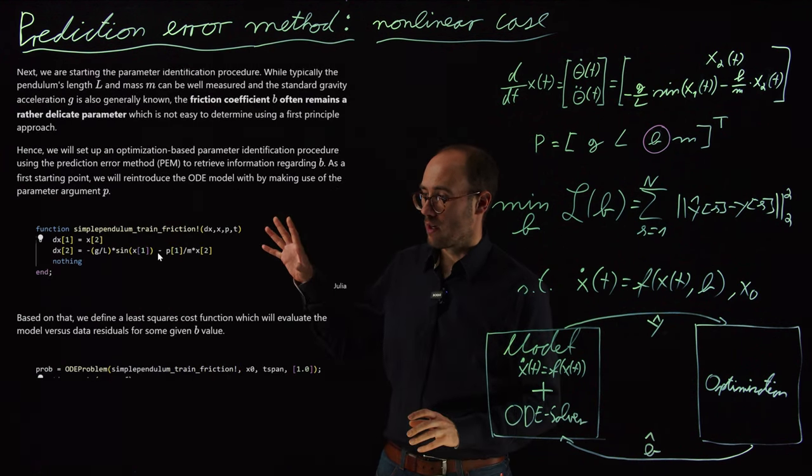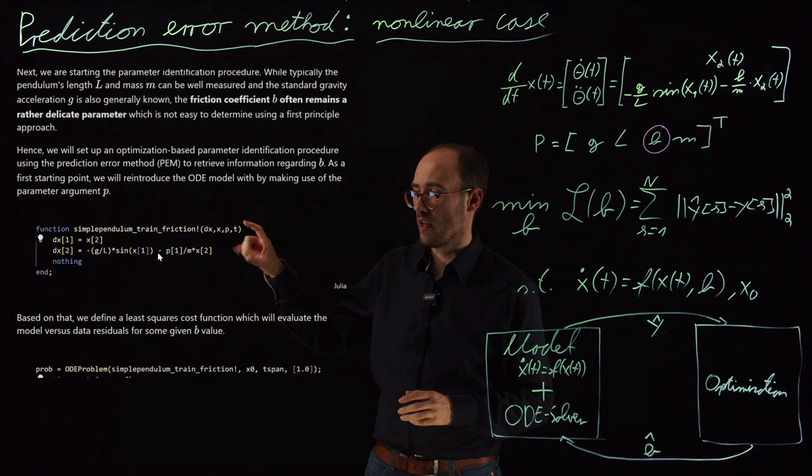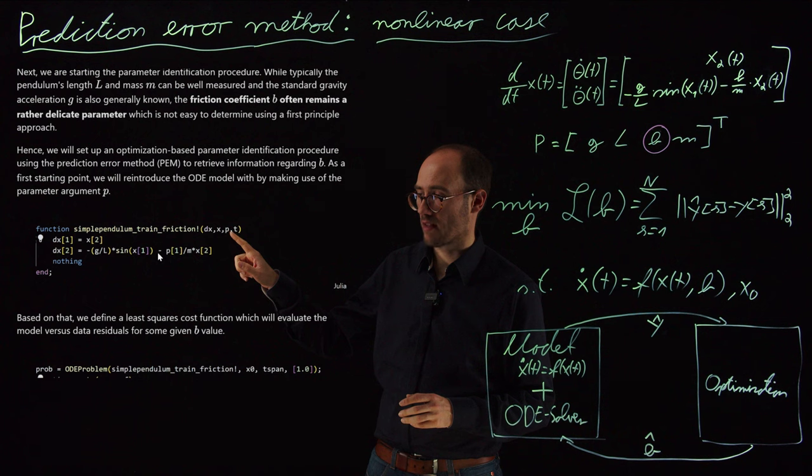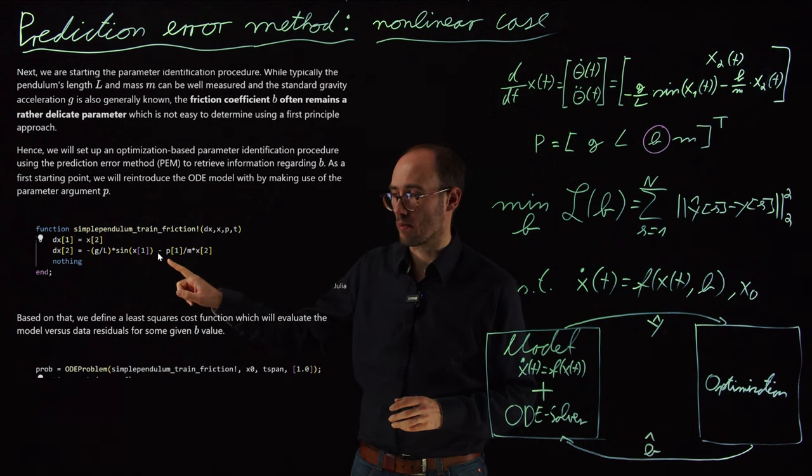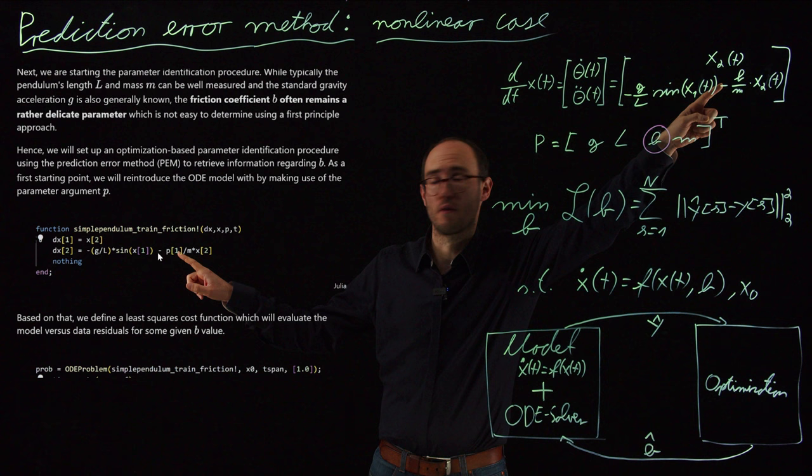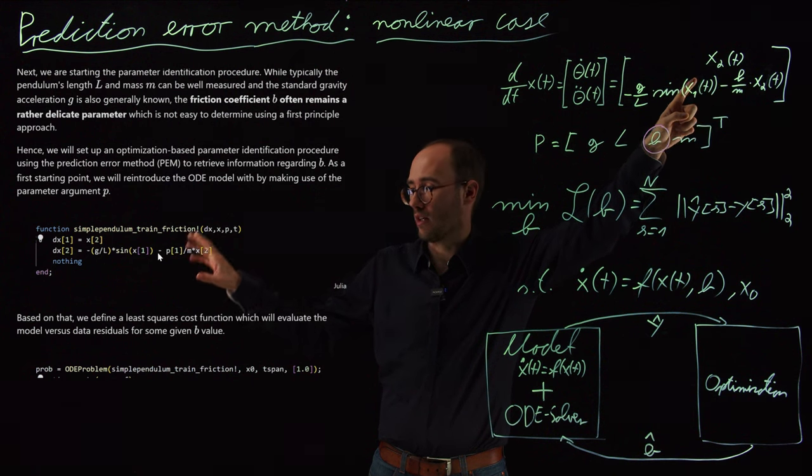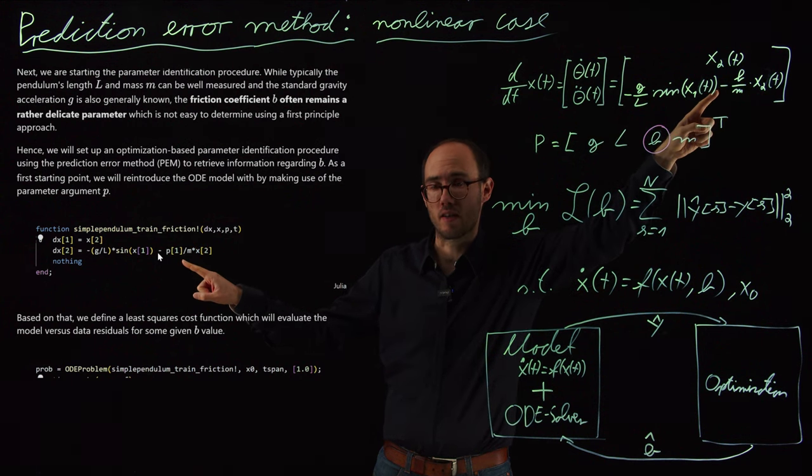So in order to train this model, we have first defined a little bit modified ODE here and this modified ODE now takes an external parameter P and this parameter P is actually only this friction coefficient. So P1, that's the only parameter which we parse to the model and that is actually this friction coefficient B. If you compare the model description here with our ODE representation, then you see that B and P1 are actually identical.